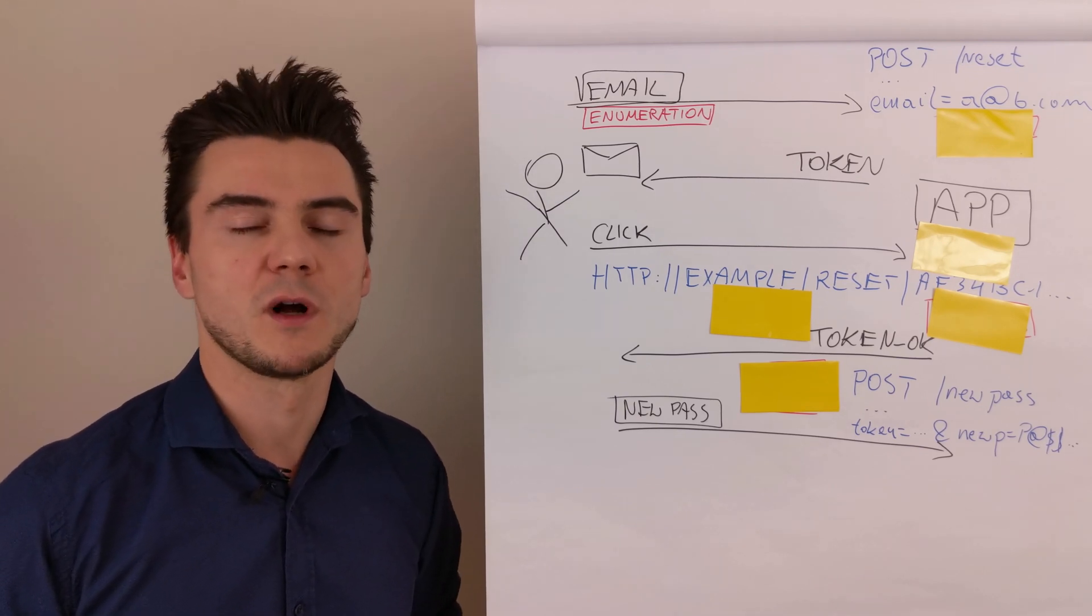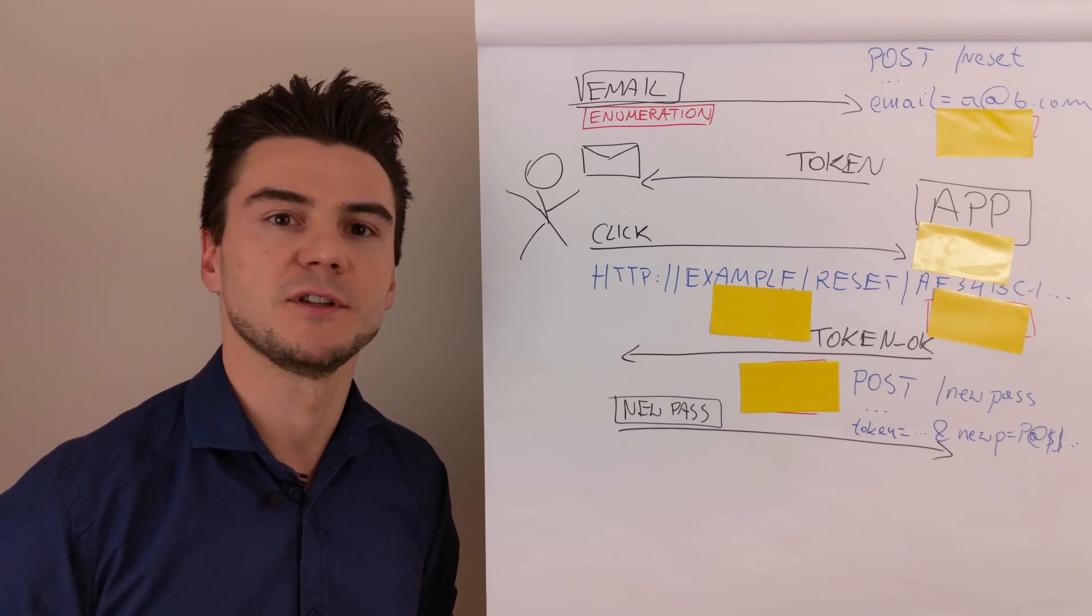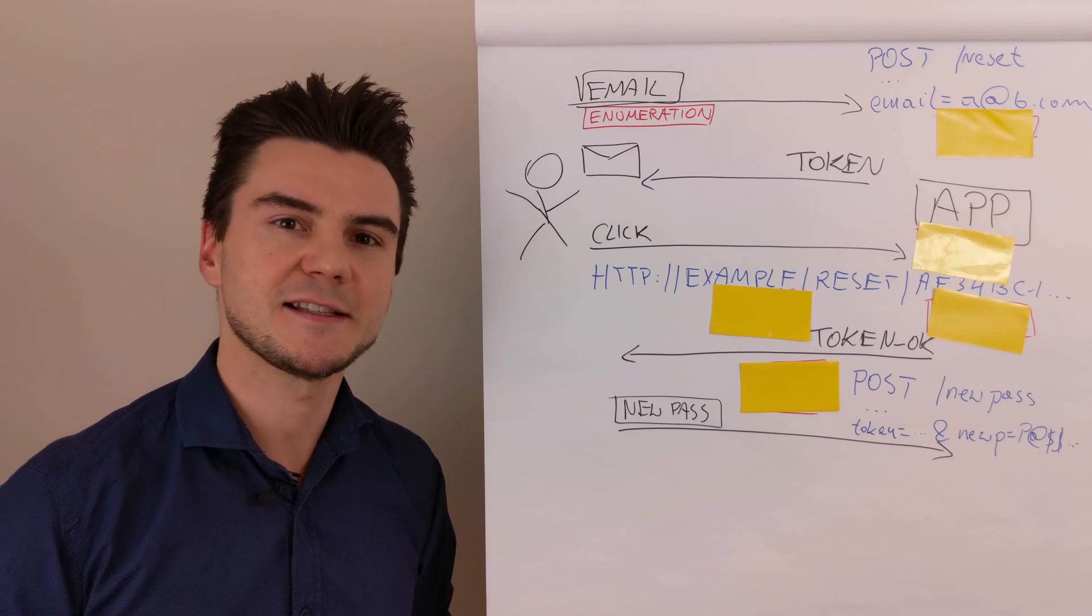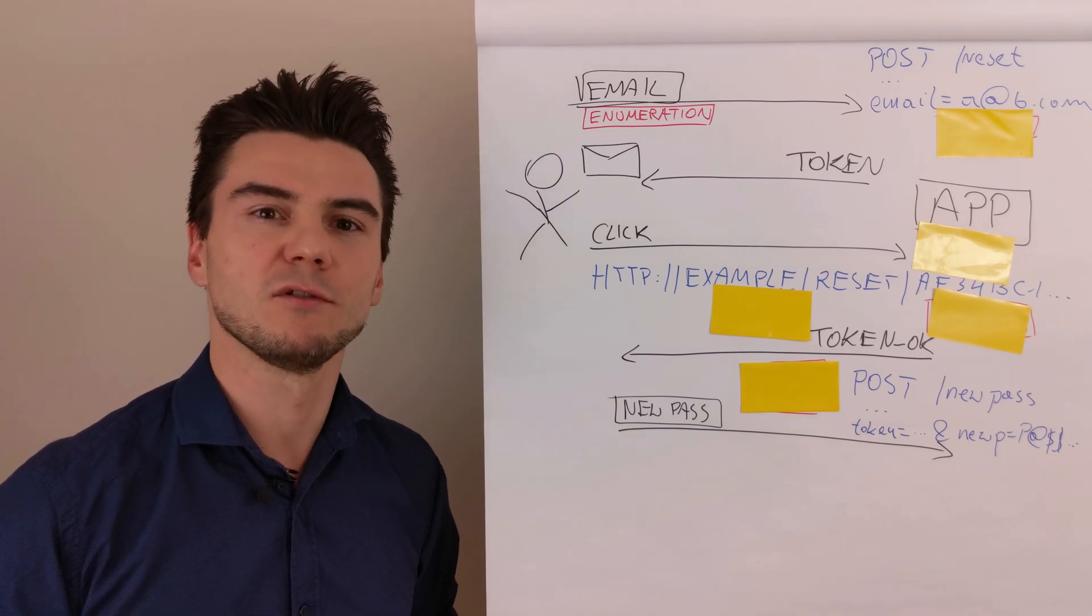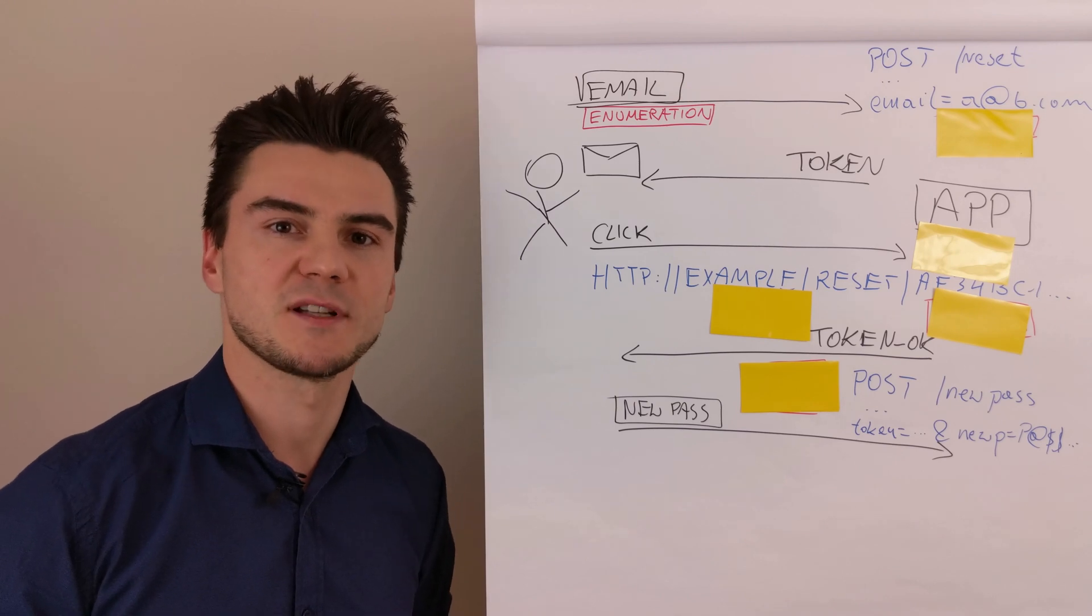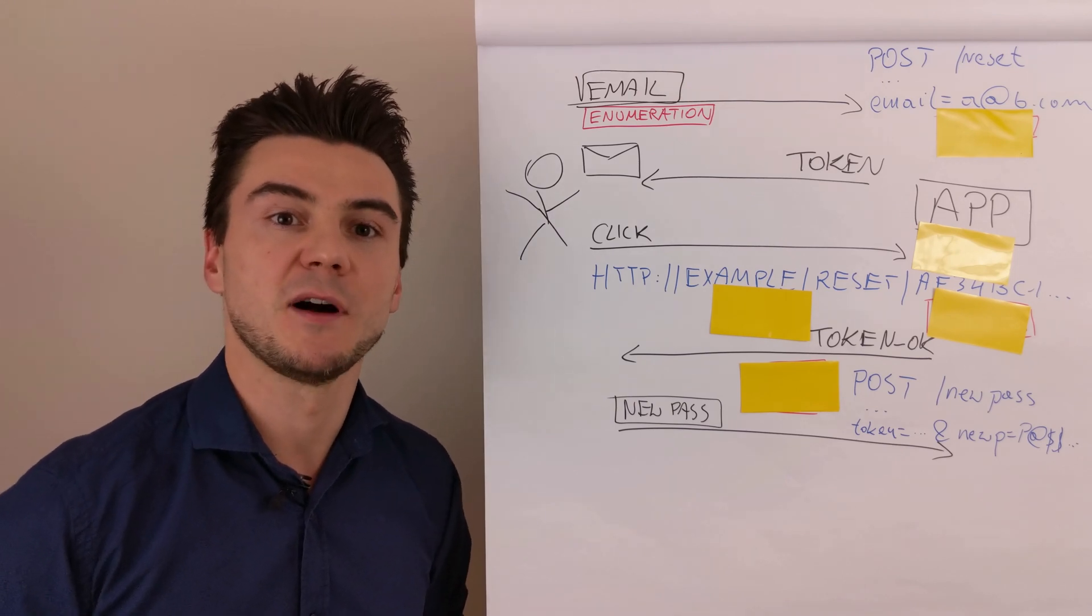I can take a public list of 1 million addresses and try to supply it to the application and find out which ones are registered in this application. The funny thing is that it may actually result in locking some of those accounts if initiating the password process results in immediate password change.